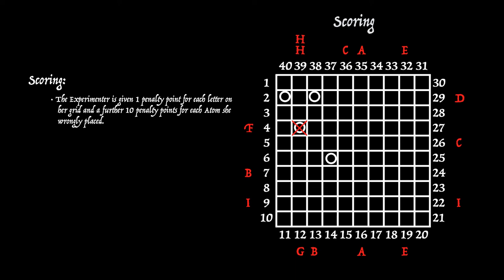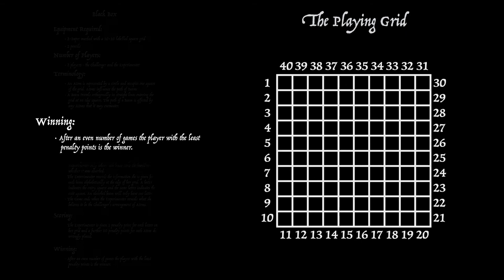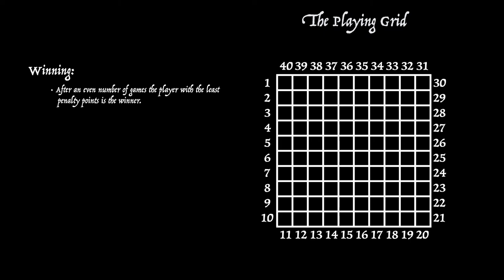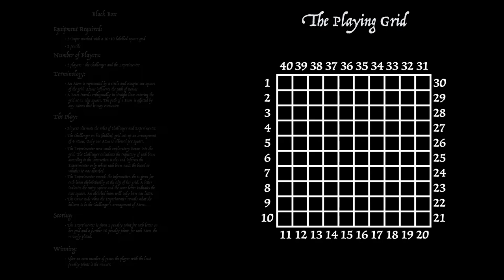One atom in the wrong place, 10 more penalty points. That's 25 penalty points for this game. Winning the game, games won by the player that has the least penalty points after you've played an even number of games.